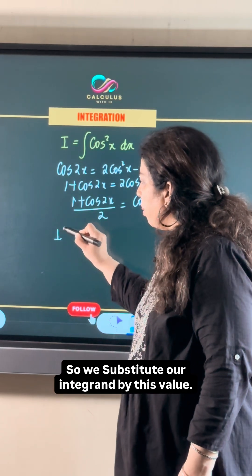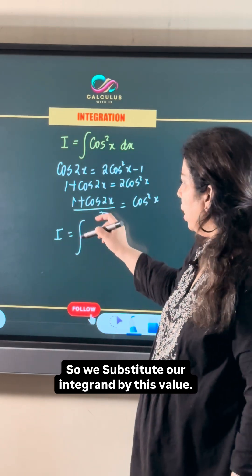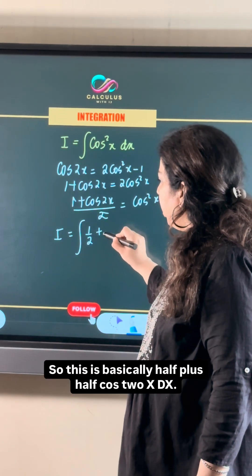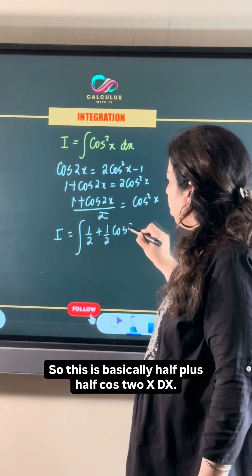So we substitute our integrand by this value. This is basically half plus half cos 2x dx.